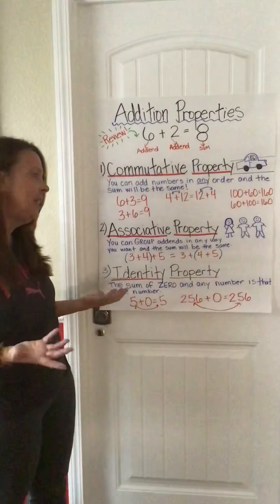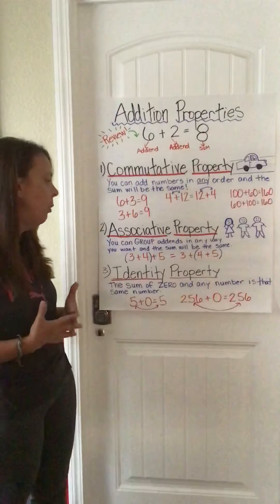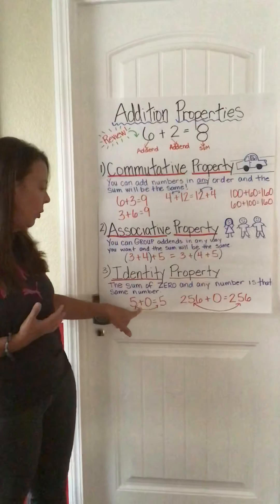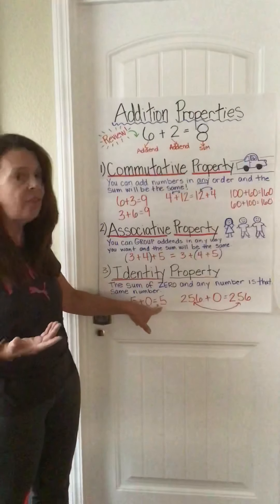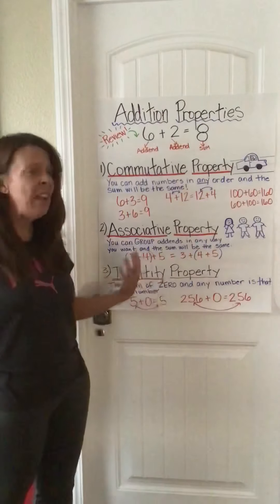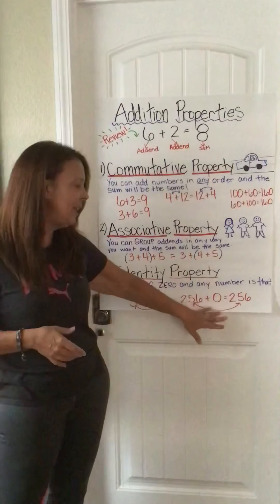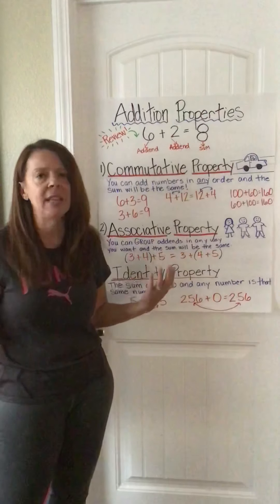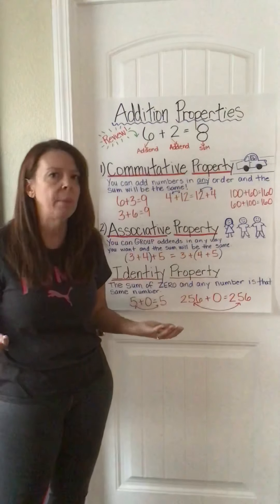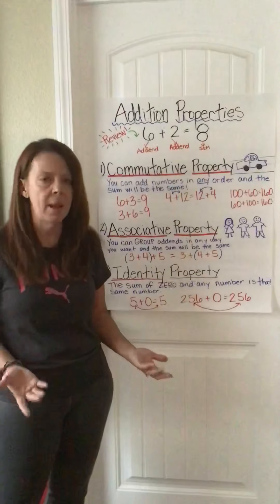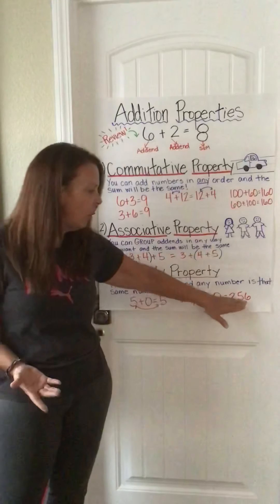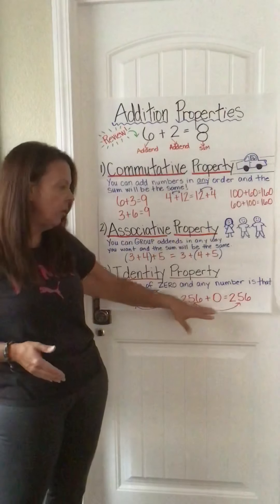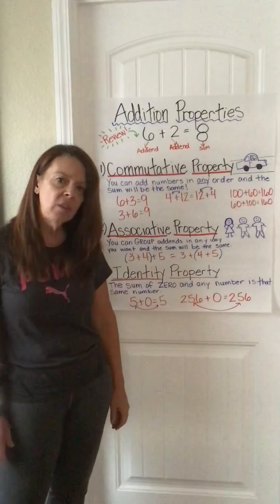The last property is pretty easy, and you probably already knew this one. The identity property says the sum of 0 and any number is still that same number. So if I add 0 to 5, I still have 5. And if I take a big number like 256 and add 0, I still have 256. Adding 0 to a number doesn't change it. Both sides of the equation are balanced like a seesaw — 256 on each side.